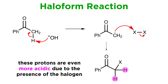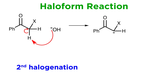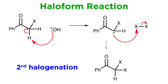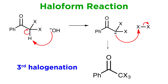In fact, the acidity of the substrate is only increased by the presence of the electron-withdrawing halogen. So more base extracts the proton, the enolate attacks and gets halogenated a second time, and then this happens yet a third time to give us this.